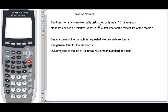Hi. In this video, I'll go over using the inverse normal function to do an inverse normal problem. The times for a race are normally distributed with a mean of 30 minutes and standard deviation of 3 minutes. What is the cutoff time for the fastest 1% of the racers?